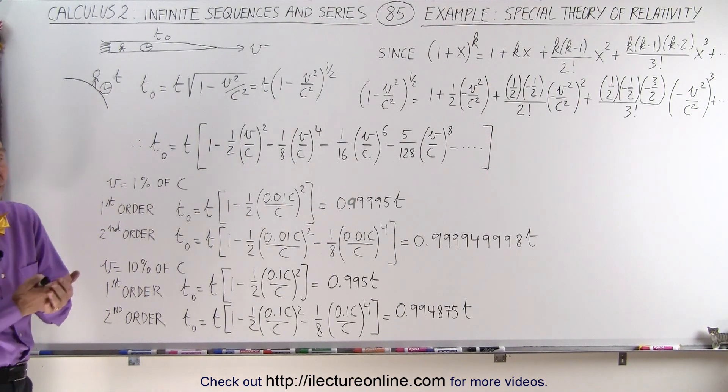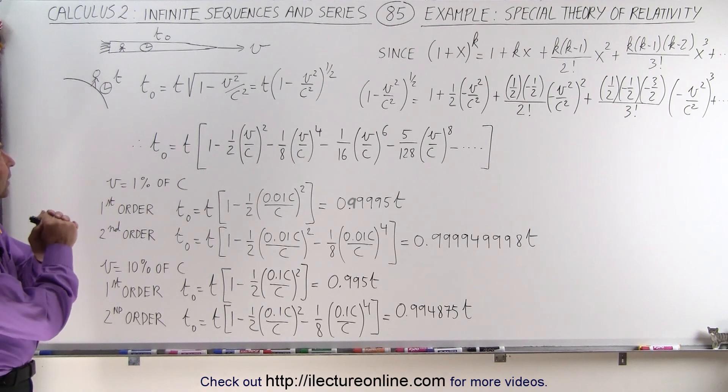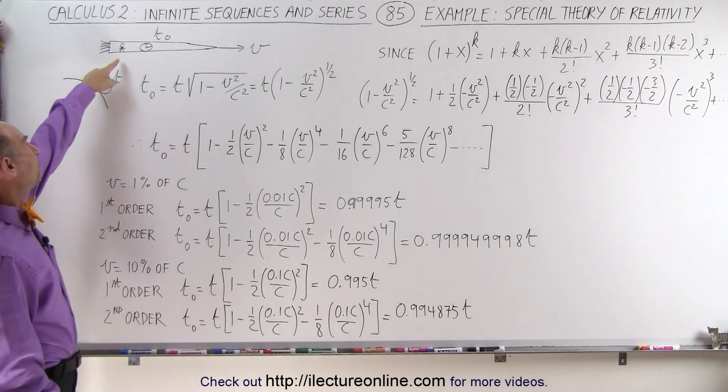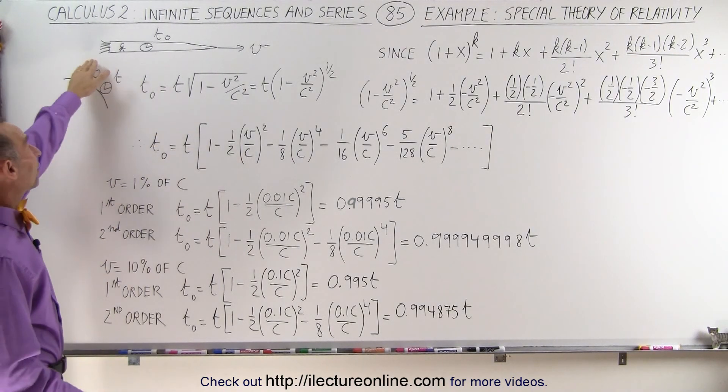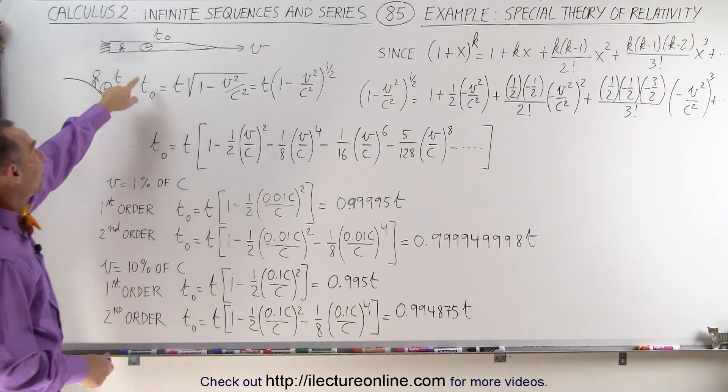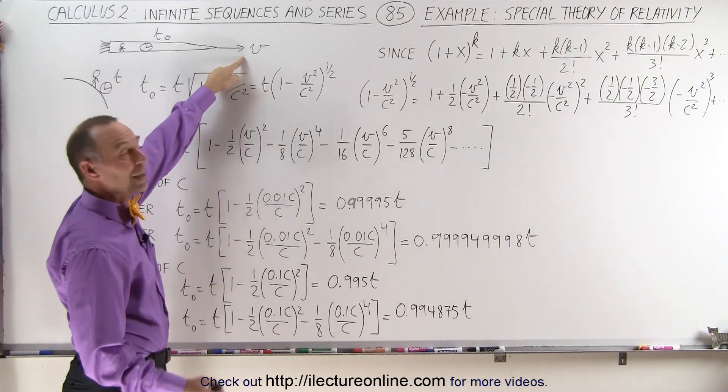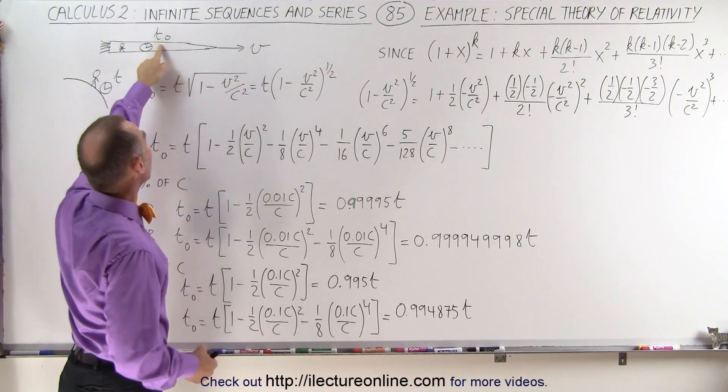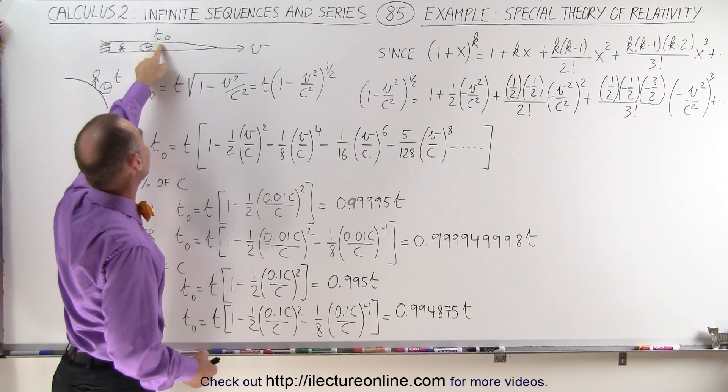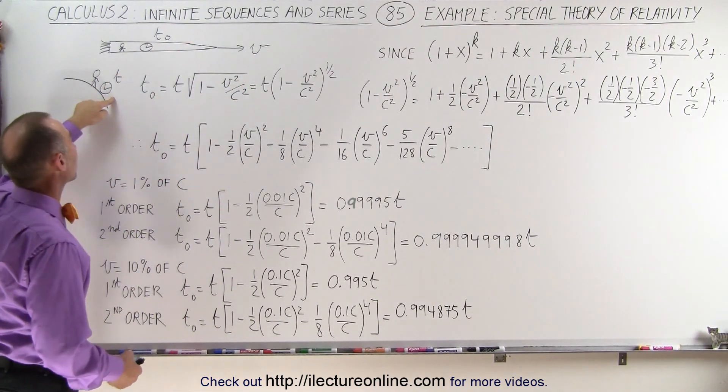Let's take a look at the special theory of relativity. We know that if a spaceship or satellite travels past the earth or around the earth at a very large velocity, that may be a fraction of the speed of light, the time measured on the spacecraft will be different than the time measured on the earth.